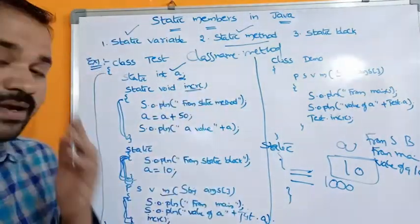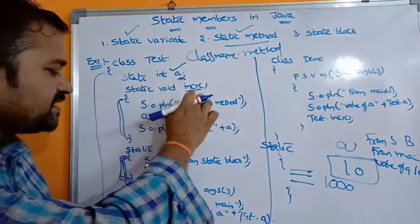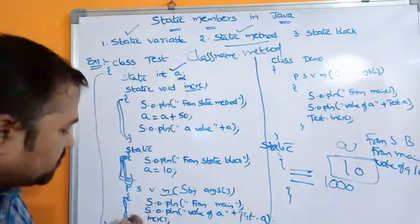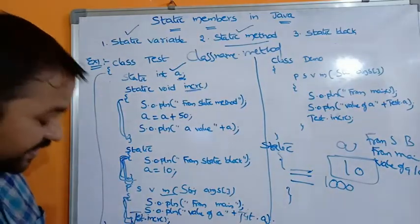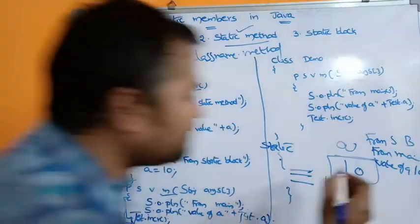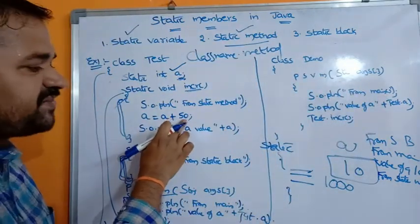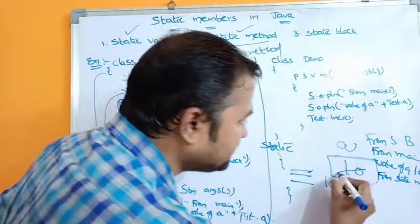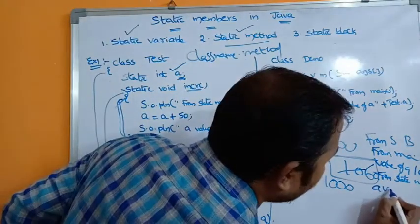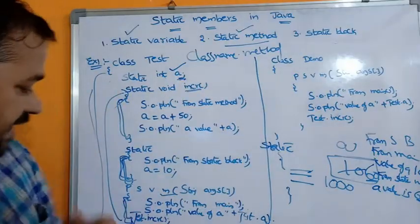incr is a static method. Since this static method and the main method are in the same class, there is no need to use the class name — but we can use test.incr if we want. When the statement is executed, control goes to the incr method. The statement 'from static method' will be printed, then a is assigned a plus 50 — so 10 plus 50 equals 60. Then 'a value is 60' will be printed.